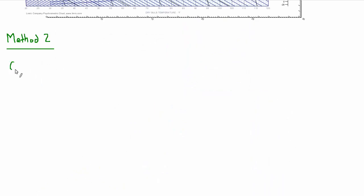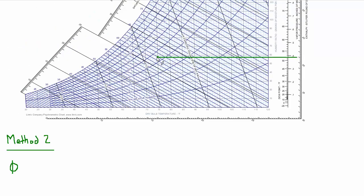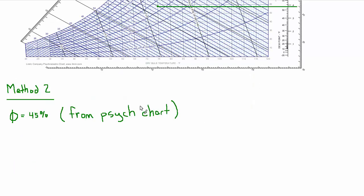So let's talk about a second method. From the psych chart, we can figure out what the relative humidity is for the conditions that we have. This point here looks like it's about halfway between 40 and 50 percent RH. So we'll call it 45 percent. And now there's an equation, equation 38.9, which relates relative humidity and partial pressure of water vapor to the saturation pressure at that temperature. In our case, we know the relative humidity. We just looked that up from the psych chart. We want the partial pressure of water vapor. And the saturation pressure can be found from app 23A, which is the properties of saturated steam.